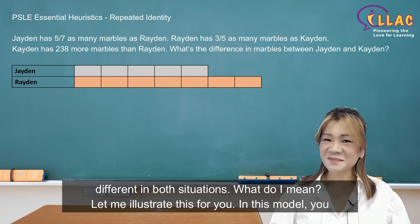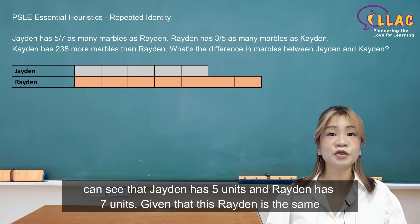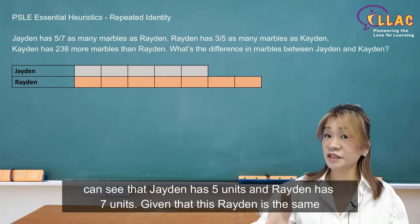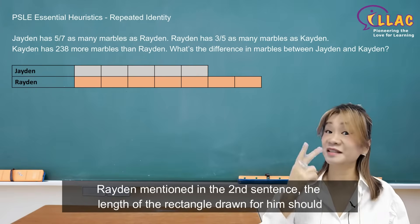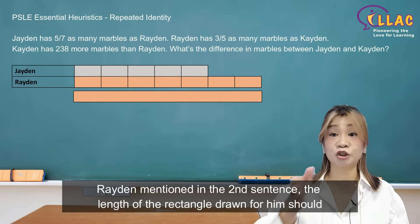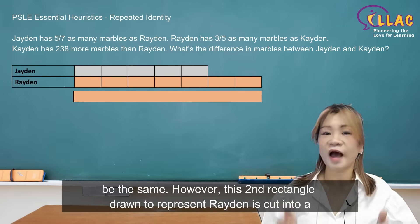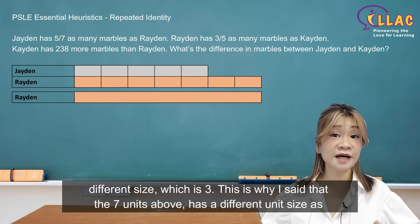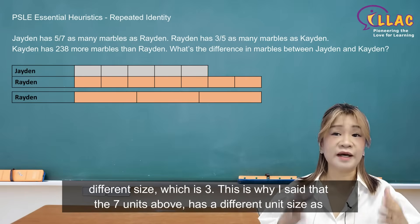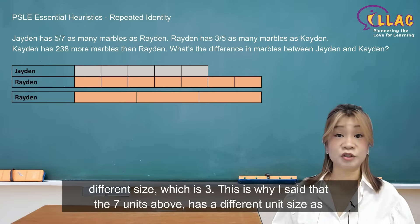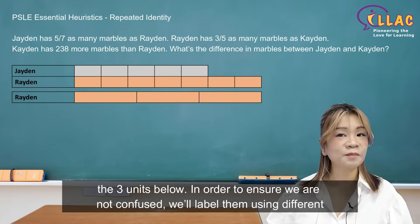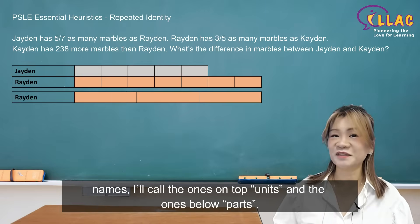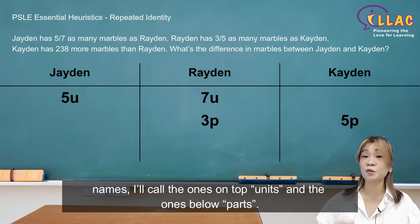Let me illustrate this for you. In this model, you can see that Jayden has 5 units and Raiden has 7 units. Given that this Raiden is the same Raiden mentioned in the second sentence, the length of the rectangle drawn for him should be the same. However, the second rectangle drawn to represent Raiden is cut into a different size, which is 3. This is why the 7 units above has a different unit size from the 3 units below. In order to ensure we're not confused, we'll label them using different names — the ones on top units and the ones below parts.